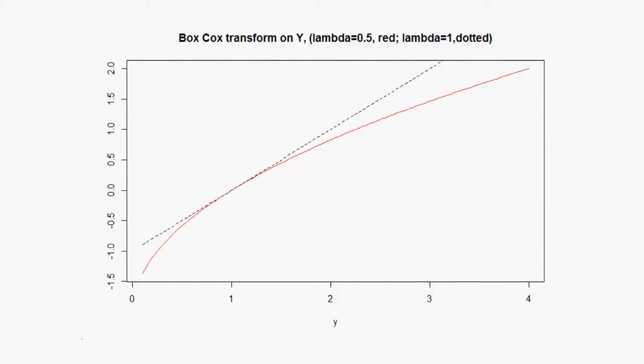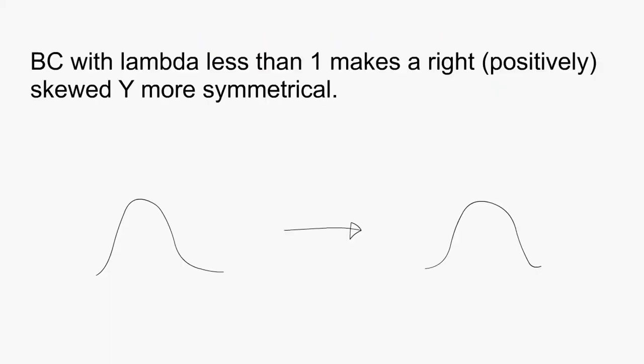As the curve is flattish for high values, this means that the power transformation will not be effective if the data is bunched up. The take home message is that lambda less than one makes a right or positively skewed distribution more symmetrical.